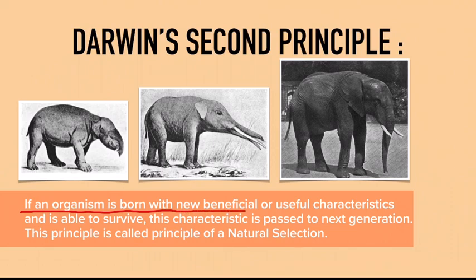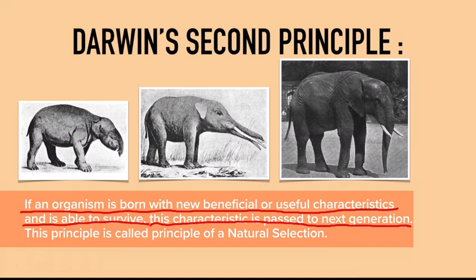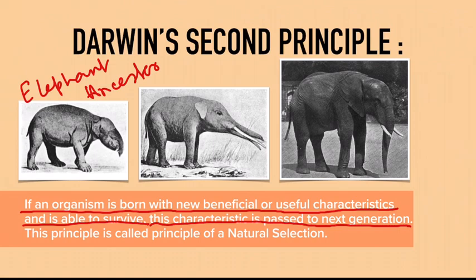Darwin's second principle states that if an organism is born with a new beneficial or useful characteristic and is able to survive, this characteristic is passed to the next generation — meaning passed to the children. As you can see in the image of the elephant, on the leftmost side is the elephant's ancestor, which was a different animal, and on the rightmost side you have the modern elephant.